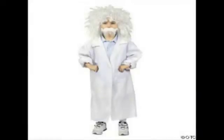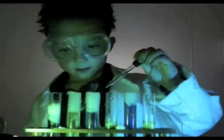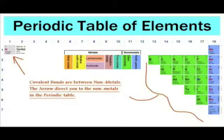Good afternoon class. Today I'm going to tell you a little bit about nomenclature. This is the most important part of chemistry. There are three types of bonds. The most basic one is the covalent bond, where valence electrons are shared. This is between two nonmetals, so you have to use Greek prefixes.